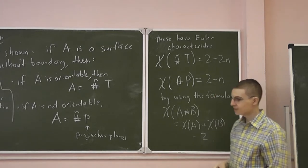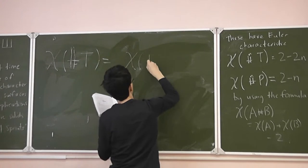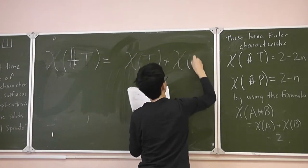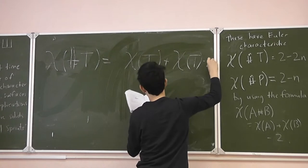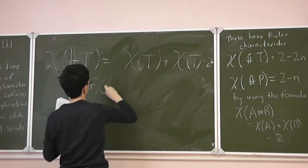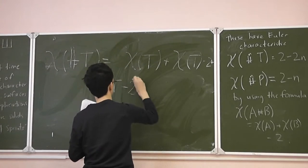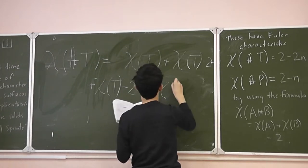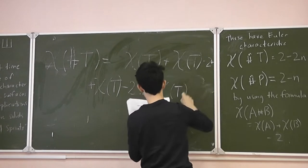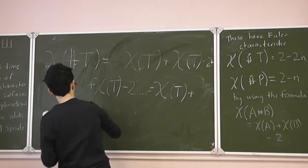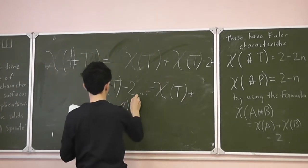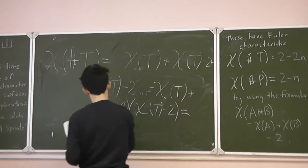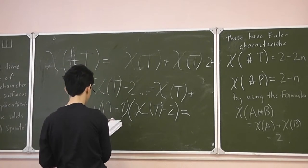Like this. It is actually the Euler characteristic of tori T plus another tori T plus another tori T minus 2n, and so on. And this is the same as the characteristic of a torus plus n minus 1 multiplied by the characteristic of a torus. And if you remember that the characteristic of a torus is 0.